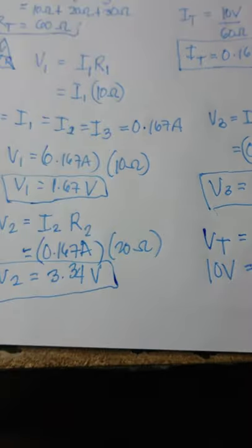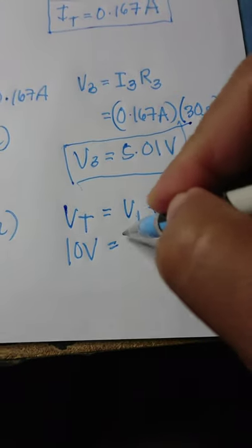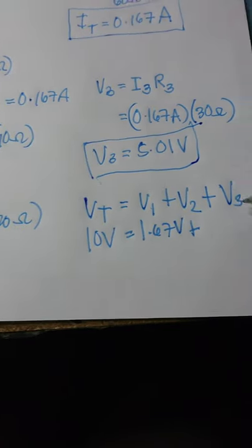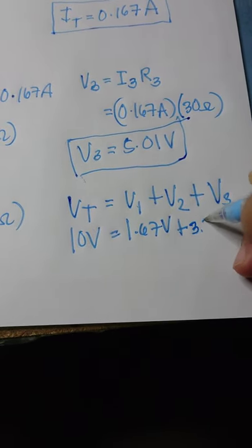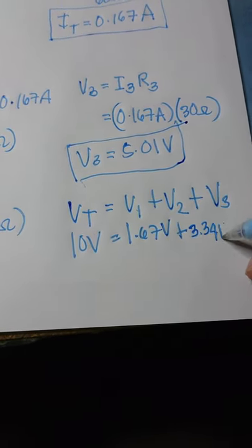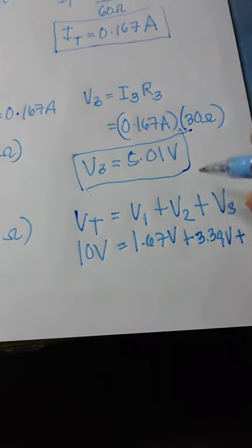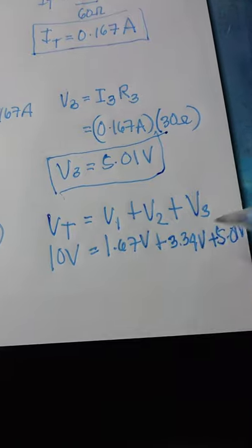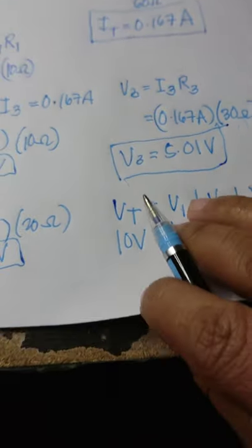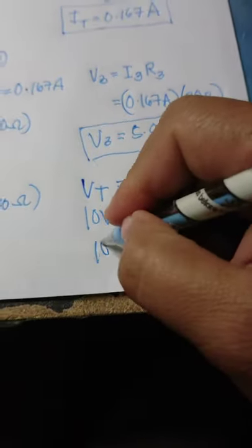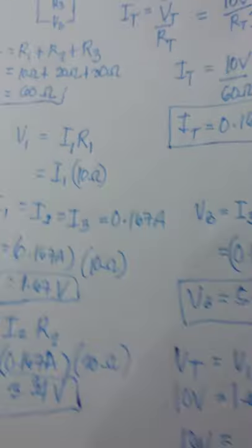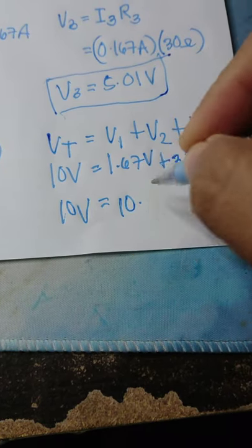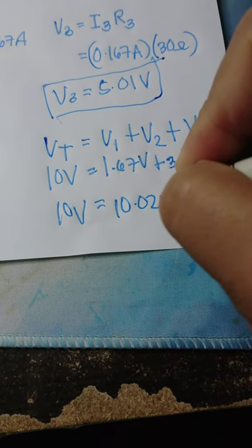V1, what is our answer? 1.67 volts, plus V2 is 3.34 volts, plus V3 is 5.01 volts. So let's calculate. We will get 10.02 volts.